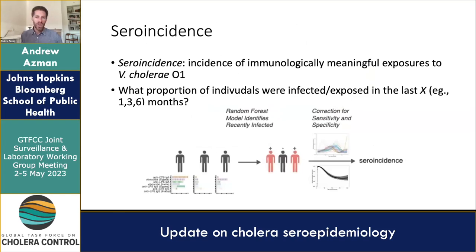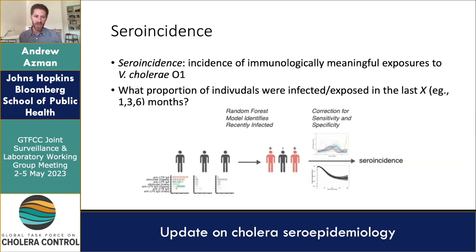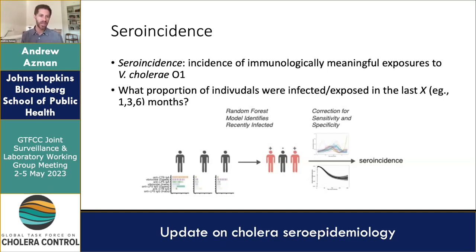The goal in all of this is to estimate sero-incidence — not a common term. What we mean is the incidence of immunologically meaningful exposures to Vibrio cholerae O1. We don't sharply distinguish between infections and exposures; it's really the frequency at which people have immunologic boosts. We try to answer: what proportion of individuals were infected in the last one, three, six months, or sometimes a year?